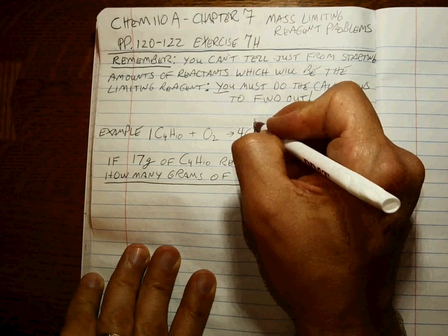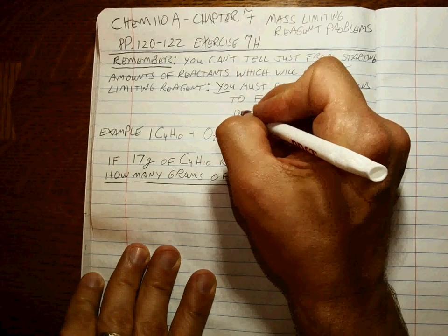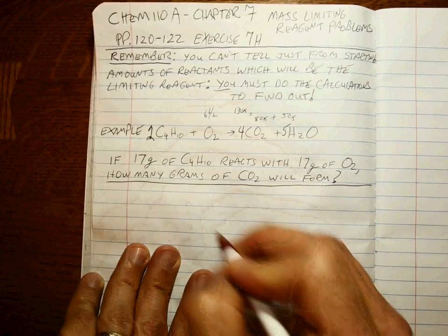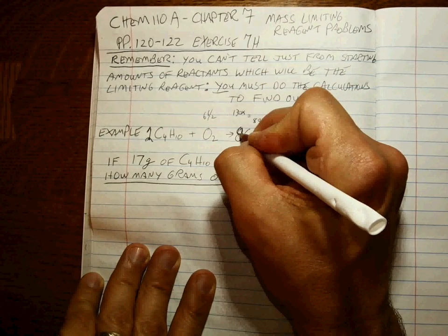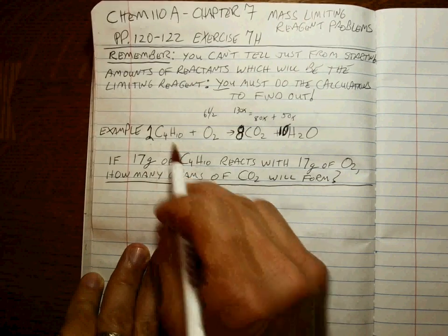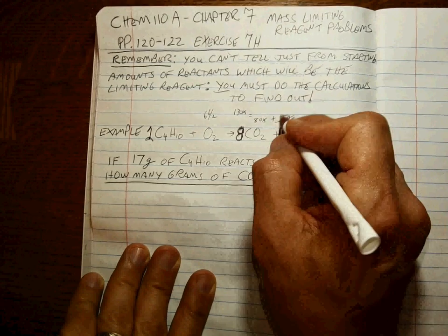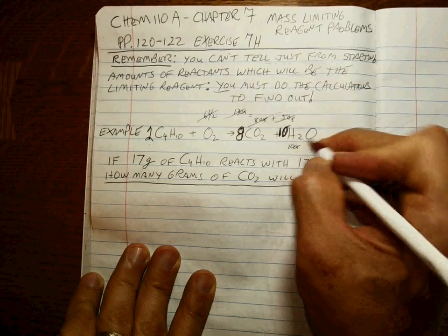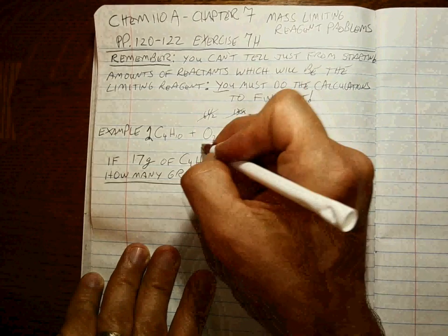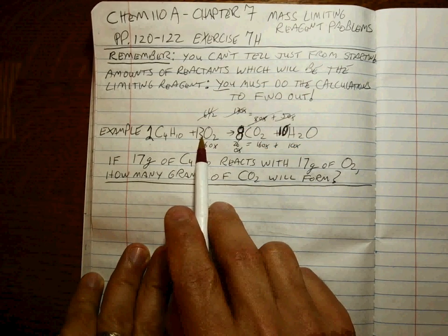That's eight oxygens plus five oxygens — 13 total — and that won't work because it's six and a half. So we change this to a two, which makes this an eight, and this a ten, giving eight carbons and 20 hydrogens. That means 10 oxygens plus 16 oxygens makes 26 oxygens total.